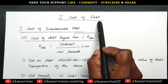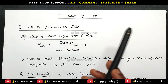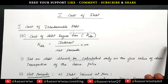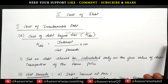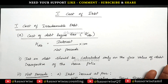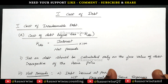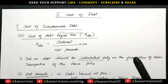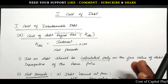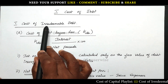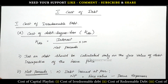Generally, debt can be classified into two different categories. Number one is irredeemable debt, and the next one is redeemable debt. Irredeemable debt means debt which is not redeemable during the life of the firm. Redeemable debt refers to debt which is repayable after a stipulated period of time — for example, after five years, seven years, or ten years. Such type of debt is called redeemable debt, whereas irredeemable debt is not redeemable during the life of the firm.